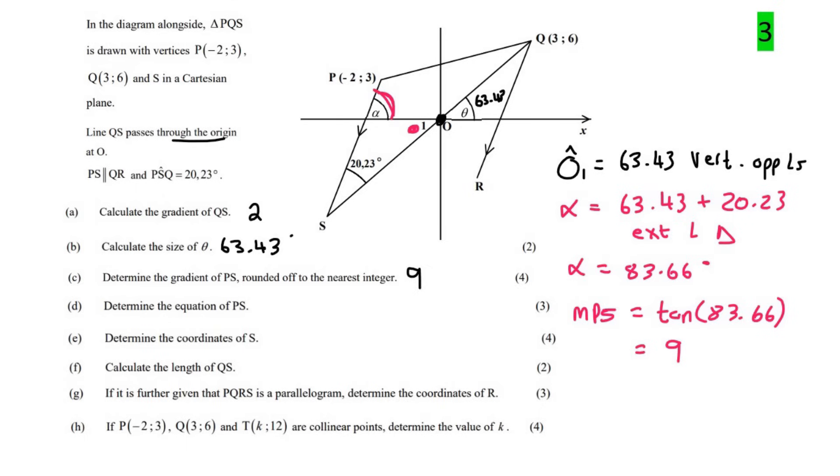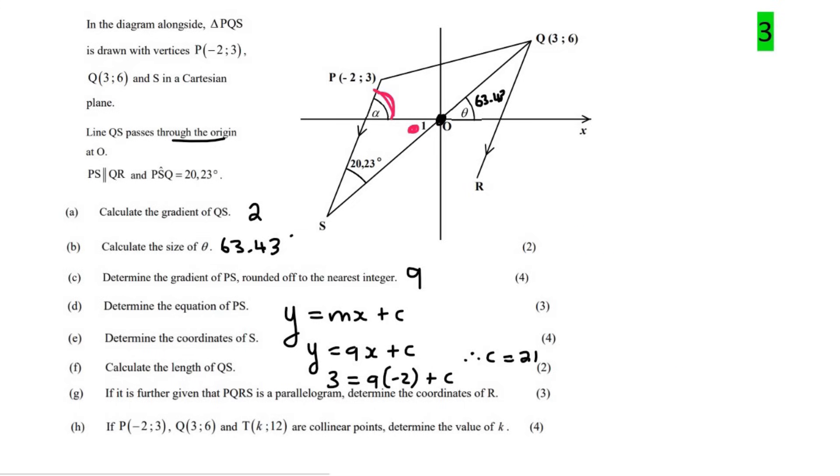Then question D, determine the equation of PS. Well, that's quite easy. So we know that a straight line is y equals mx plus c. We've just worked out its gradient as 9. And then to find c, you would plug in any point on the line, which could be this one over here. And so we would plug that in as 3 equals 9 times negative 2 plus c. And if you had to work that out, you would find out that c is equal to 21. And so the final answer for that one would be y equals 9x plus 21.